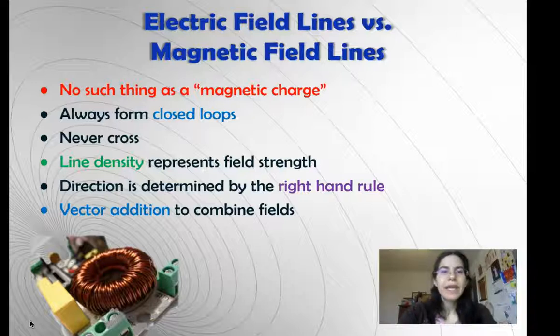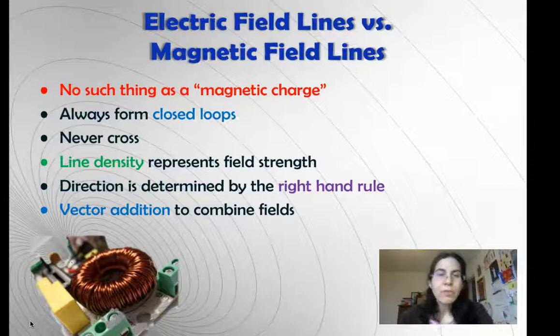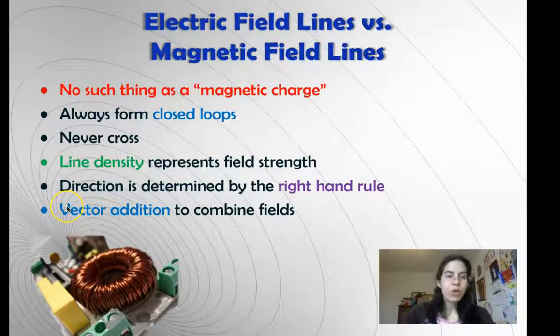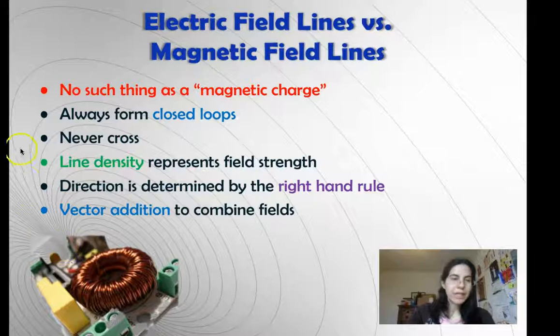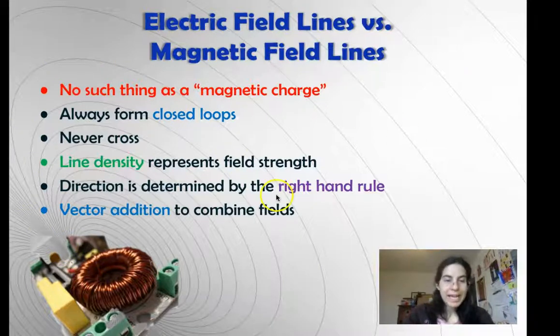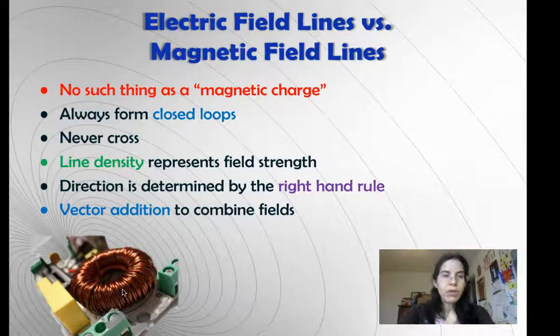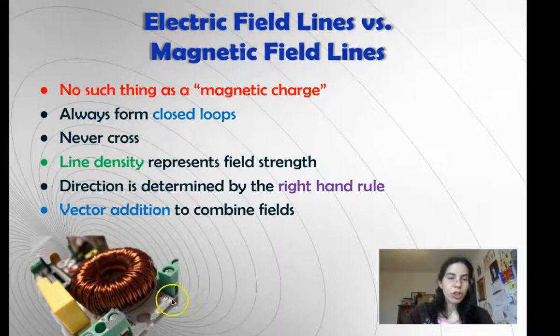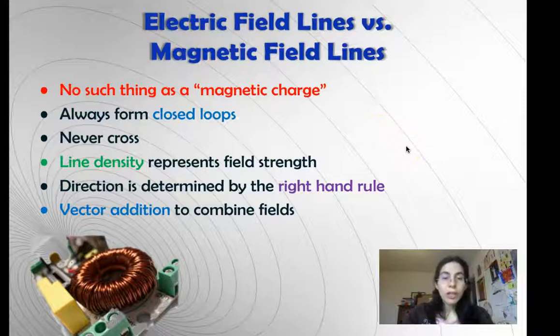First and foremost, there is no such thing as magnetic charge. Magnets are not charged. Everything in the lab today has been neutral except the electric current. Magnets have a north pole and a south pole. Fun fact that you may or may not have noticed with the iron filings, magnetic field lines always form closed loops. Anything you're drawing with magnetic fields is going to loop around and make a closed loop. If you run out of space on the page, just be aware that the field lines keep going outside it. Like electric field lines, magnetic field lines never cross, and again, line density represents field strength. Direction is determined by the right-hand rule, and if you have more than one magnet or more than one source of magnetic fields, you'll add them with vectors as usual.